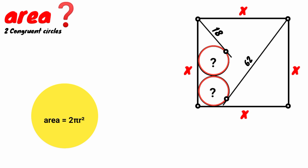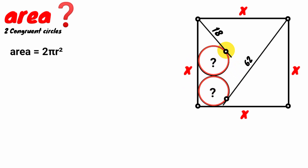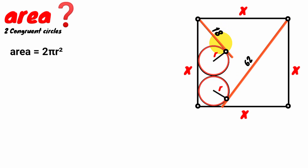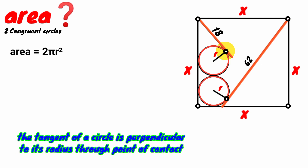We need the value of r. Draw the radius of this circle to this point of contact and that of this to this point of contact. We see this line is a tangent to this circle at this point, and here this is also a tangent at this point. From circle theory, there is a rule that the tangent of a circle is perpendicular to its radius through the point of contact. So this tangent is perpendicular to this radius, hence it is a right angle. And here, this tangent is also perpendicular to this radius, therefore this angle is a right angle.